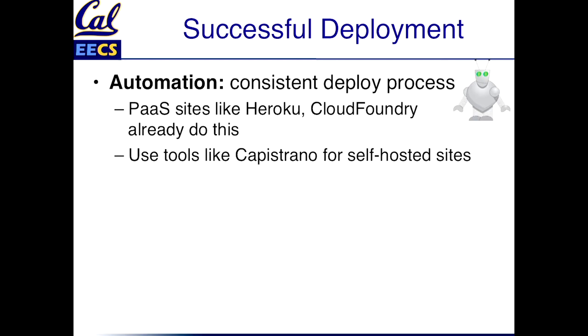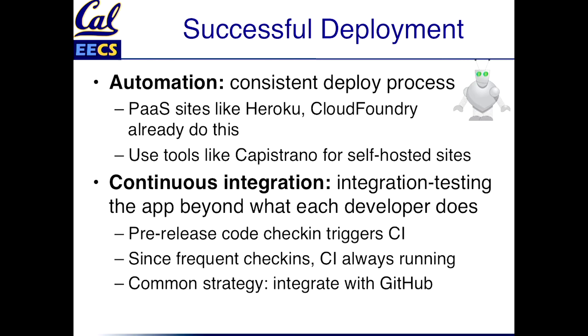Even if you're not using platform services that do this for you, there are pretty nice tools like Cap or Capistrano that will do it if you're hosting your own site on a VPS. Continuous integration basically means that every time you push, you're also doing some integration testing on the app beyond what testing is normally done by each developer. So things that you might not necessarily run in each developer's test suite, you could run in a staging or testing environment in the cloud — things like stress testing, or checking for correct behavior of JavaScript across different browsers. Things that wouldn't make sense for every developer to do on their own but that have to be done when you push major releases.